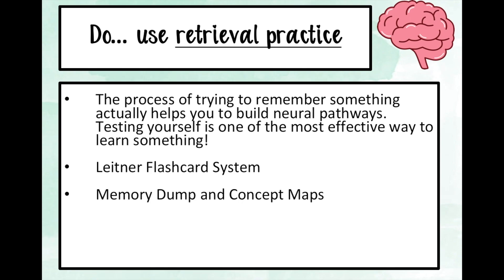Another effective strategy is memory dump followed by concept maps. For a memory dump, take your topic — say, photosynthesis — give yourself five minutes and a blank sheet of paper, and write down everything you can think of related to that topic. Then go back to your revision notes and in a different colour write down what you missed; you might turn that into flashcards. A concept map is similar, but you write down everything you know and try to create connections between different pieces of information within the same topic. Building those connections creates more effective neural pathways, helping you deeply embed knowledge and move it to long-term memory.